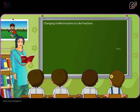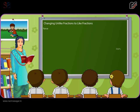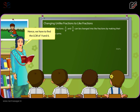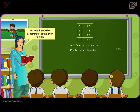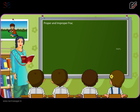Changing unlike fractions to like fractions. We can change unlike fractions into like fractions by making their denominators the same. For example, fractions 2 by 9 and 5 by 6 can be changed into like fractions. To make the denominator the same, we find the LCM of 9 and 6. LCM of 9 and 6 is equal to 2 into 3 into 3, which equals 18. Dividing the LCM by the denominator and multiplying the numerator by the corresponding quotient gives 4 by 18 and 15 by 18 as the required like fractions.